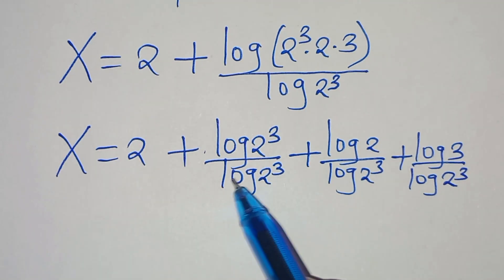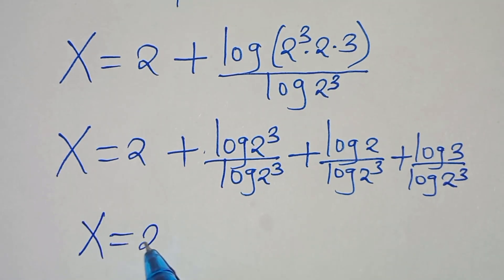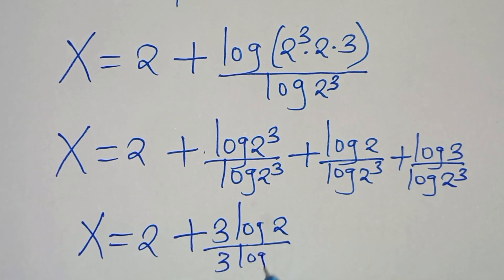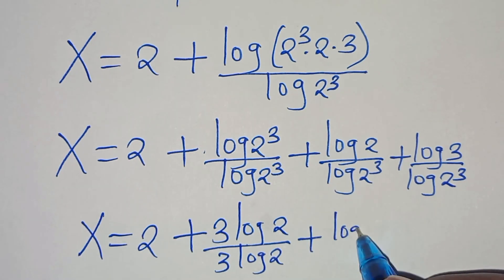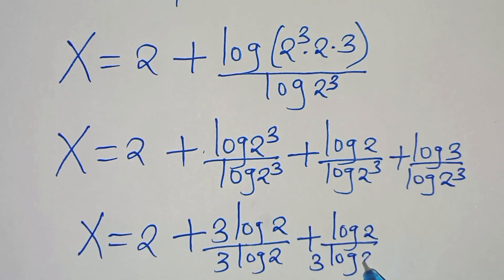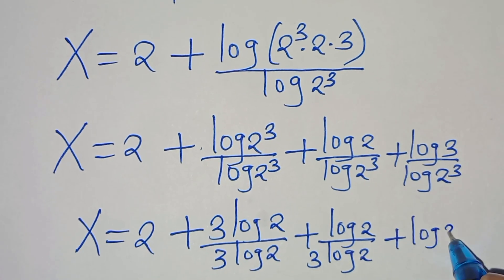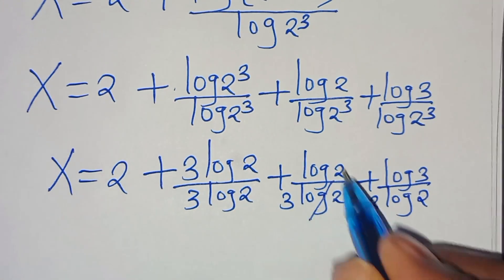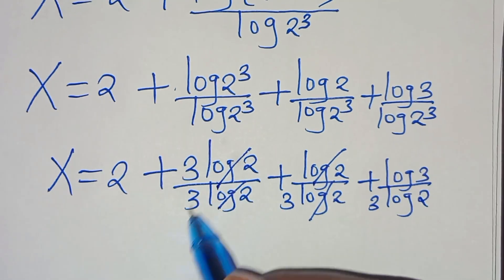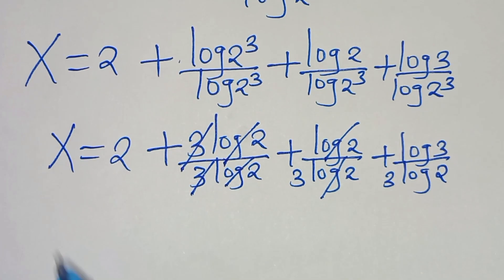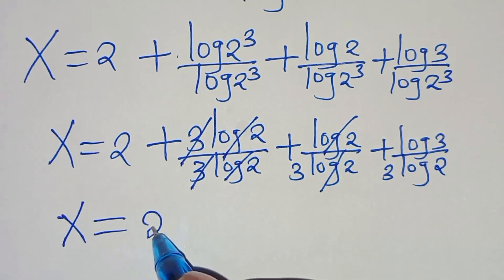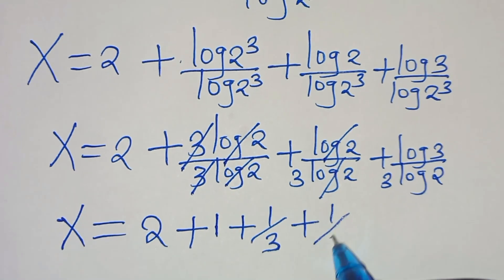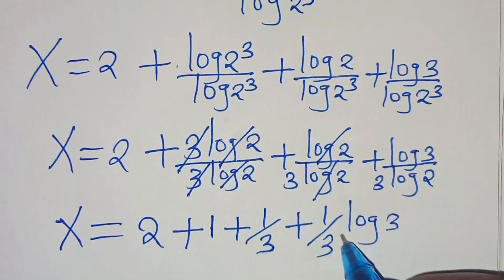Applying the power property, we have x equals 2 plus 3·log(2) divided by 3·log(2), then plus log(2) divided by 3·log(2), then plus log(3) divided by 3·log(2). Simplifying log(2) with log(2) in the first and second terms, and 3 with 3, we get x equals 2 plus 1 plus 1/3, then plus (1/3)·log(3) divided by log(2).